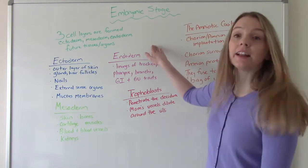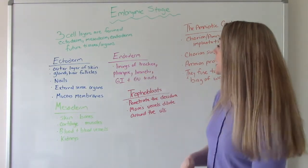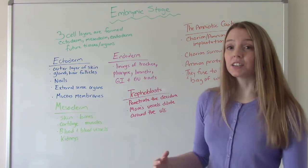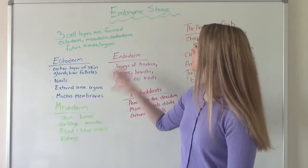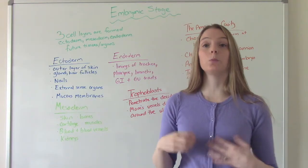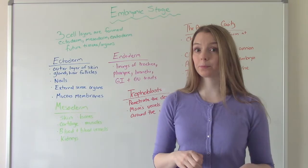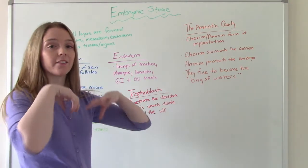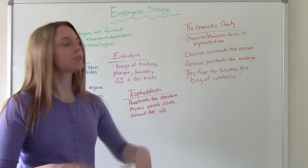The endoderm is the linings of the trachea, pharynx, bronchi, digestive tract, and GU tract. These three cell layers are actually attached by what will become the umbilical cord. So we have everything developing and a rudimentary umbilical cord forming.